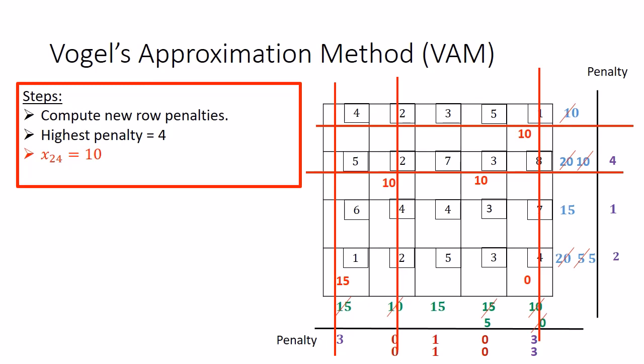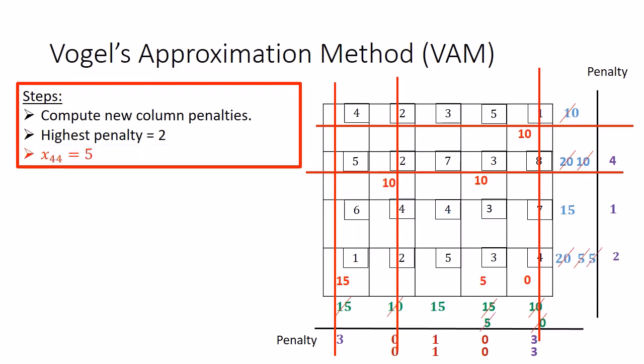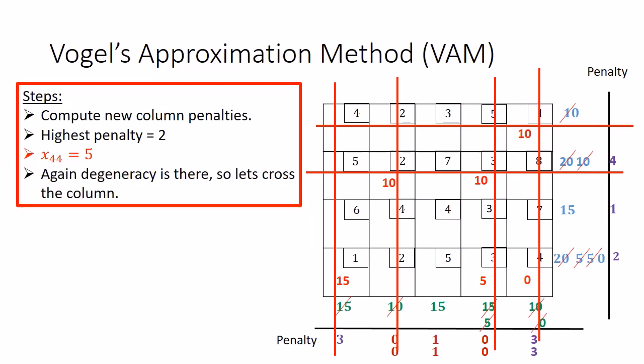The supply of source 2 is exhausted, so the second row gets crossed out. Since a row was crossed out, compute the column penalties again — they turn out the same. The largest penalty is 2, so we allocate in the 4th row. In the 4th row, the cell to be allocated has cost 3, and we allocate 5 units there. Supply and demand are simultaneously exhausted again, so we break the tie arbitrarily, cross the column, and retain 0 on the supply side.